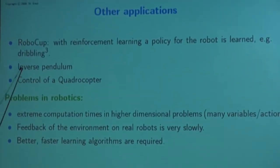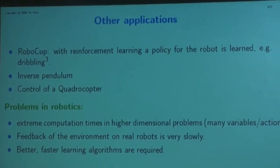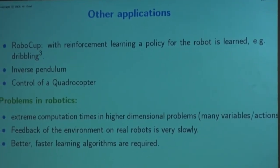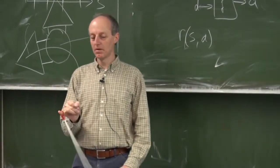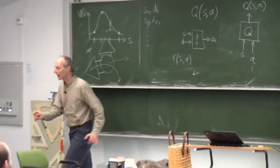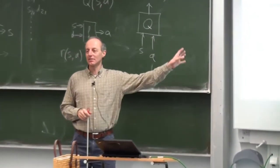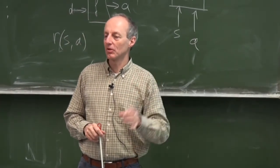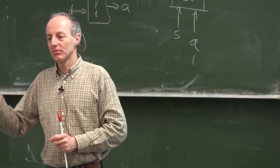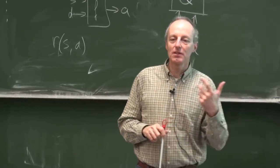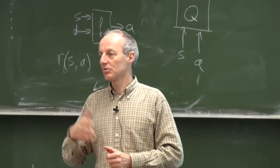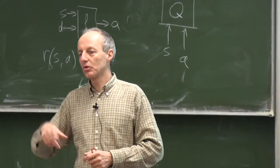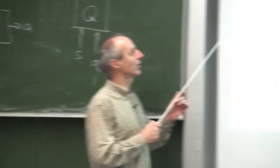A classical benchmark is the inverse pendulum, the cart-pole problem. You have a pendulum and the task is to swing it up and control it in the upright position. In control theory, people model this with a differential equation and develop a controller. But with reinforcement learning, no engineer has to develop a controller — you just use the reinforcement learning algorithm and it will learn to control the pendulum. This task has been solved perfectly with reinforcement learning.